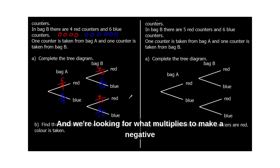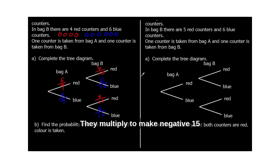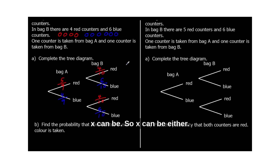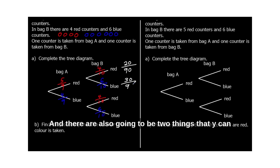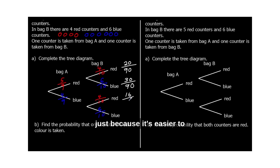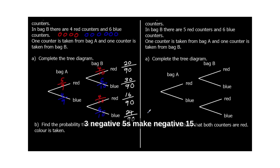Now to answer the questions, if we wanted the probability of red then red, we multiply these two probabilities. So the probability of red then red is five ninths times four tenths. To multiply fractions, we times the top and times the bottom. So that's five times four, which is 20, out of nine times ten, which is 90. The probability of red in bag A then blue in bag B is five times six, so 30 out of 90. The probability of blue then red is four times four, which is 16 out of 90. And the probability of blue then blue is four times six, which is 24 out of 90. So these are all the different possible options, and if we added them up, we see that they add up to one whole — everything that can possibly happen has to add up to one whole.